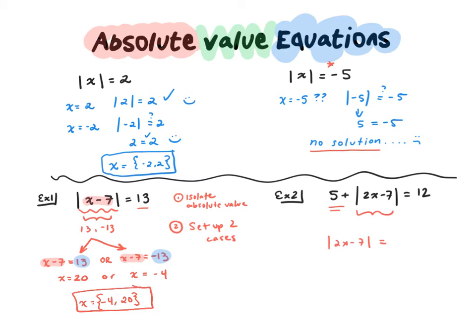So I isolate absolute value, set up the two cases, and then you just solve both equations. So you can have two equations for yourself.